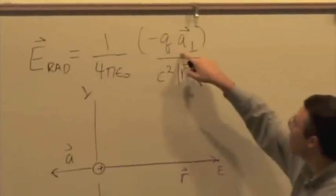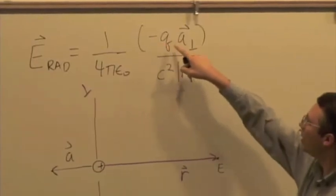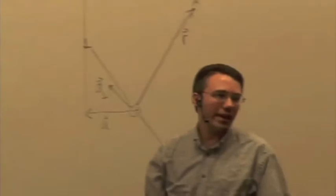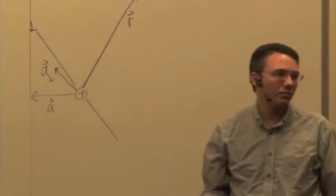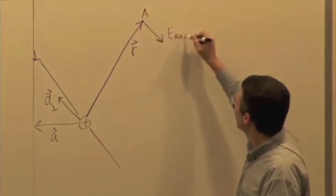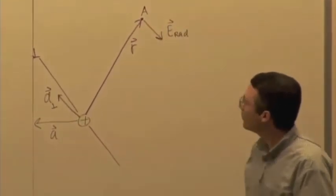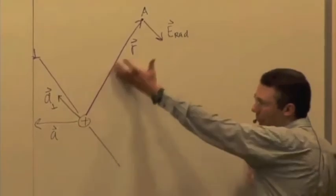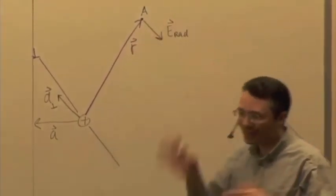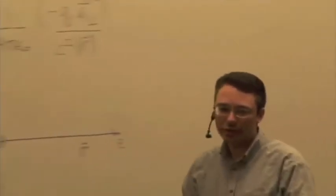And so after some time we wait and we find radiation that is going to be detected at location A. But remember it's negative Q times A perpendicular. So we have a negative sign times a positive charge, so the radiation we detect will be in direction 4. So the radiative field will be that way.